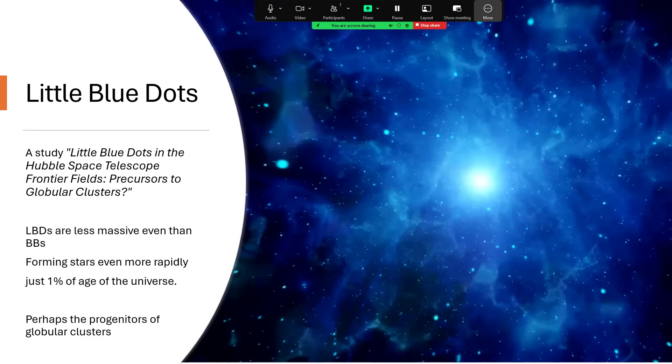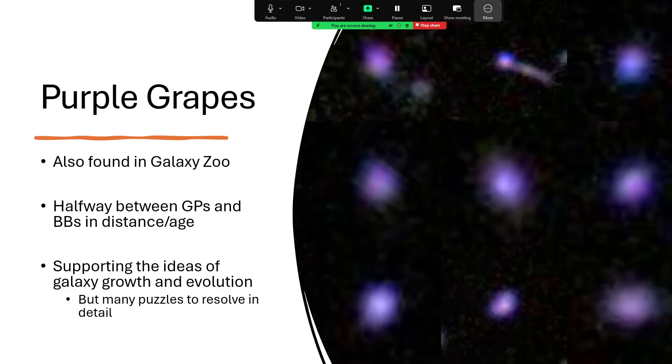And just to complete the zoo, we have Purple Grapes, PGs. These are halfway in distance and age between the GPs and the BBs—gosh, this gets confusing, doesn't it? But again, it's really showing that we have a spectrum of different stages of the growth and evolution of galaxies.